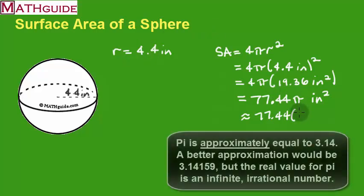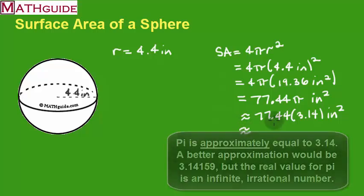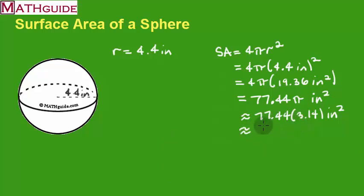All right now I am going to put in a value here for pi. Now this is an approximation, that's why I put the little wavy symbols because now we're dealing with an approximation. So if I multiply this value times our approximate value for pi, I'm getting approximately 243.16 inches squared.